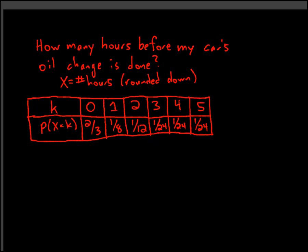In this video we're going to compute the variance and standard deviation of this example of a finite discrete random variable that we've used a couple of times now. The last time this variable showed up, we computed its expectation, and we found that the expectation of this random variable — which can also more concisely be denoted as mu — is 19 over 24.